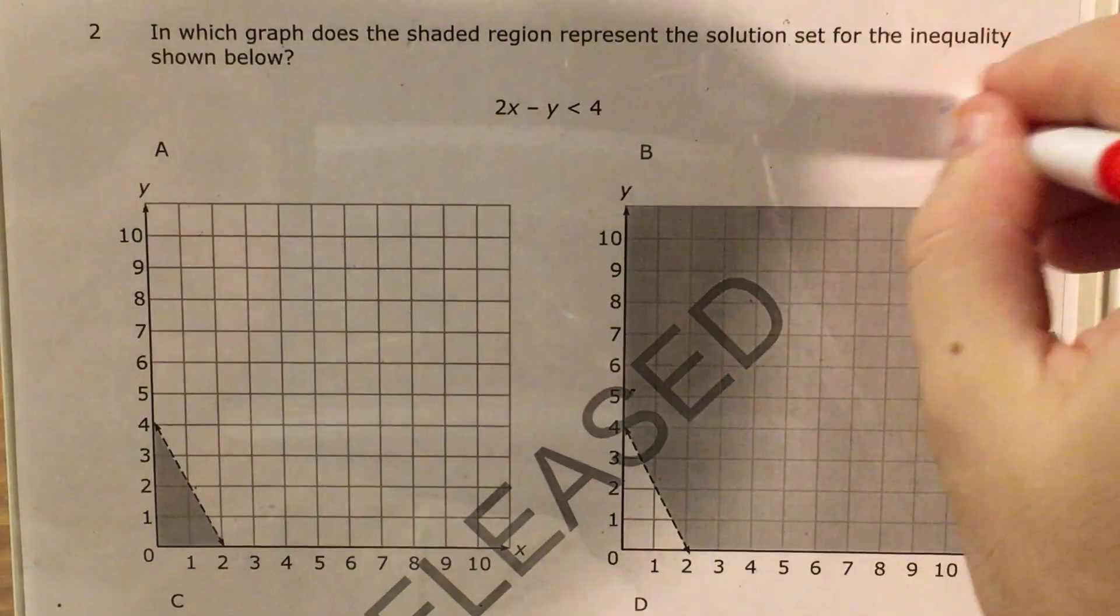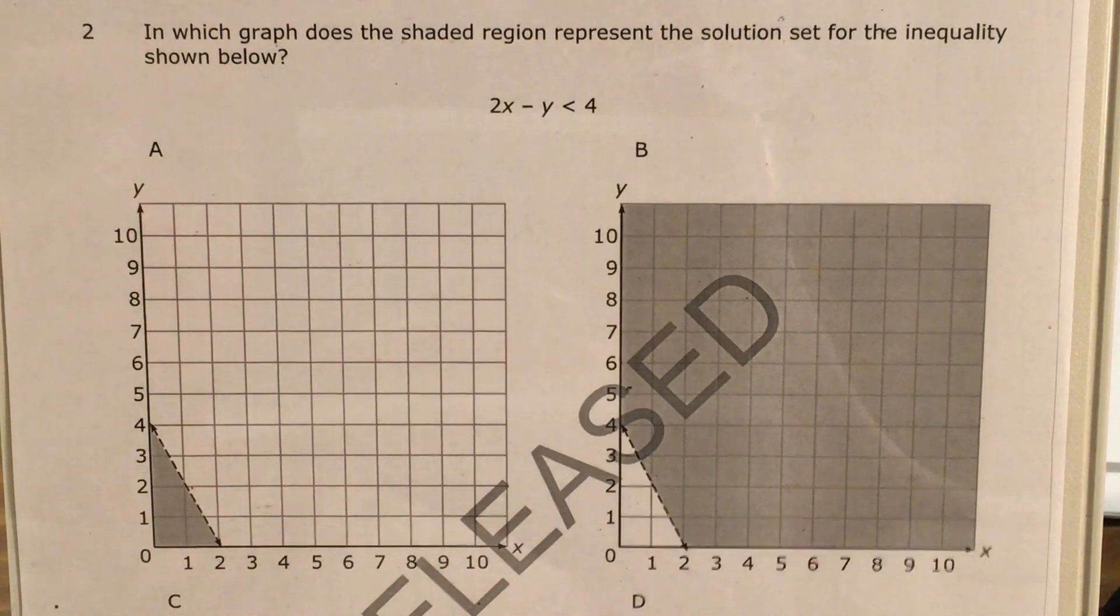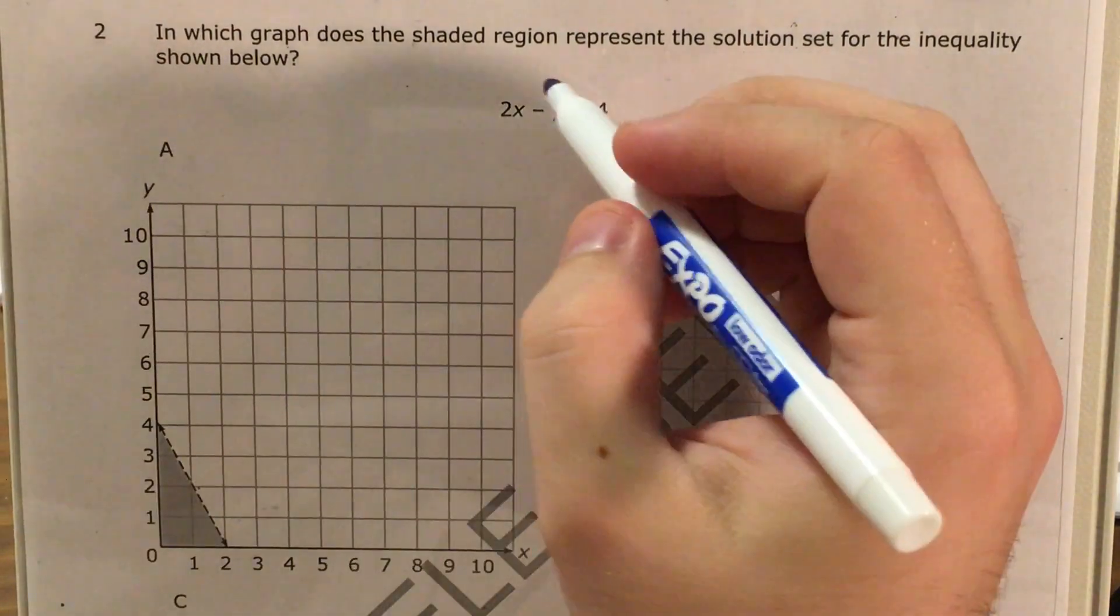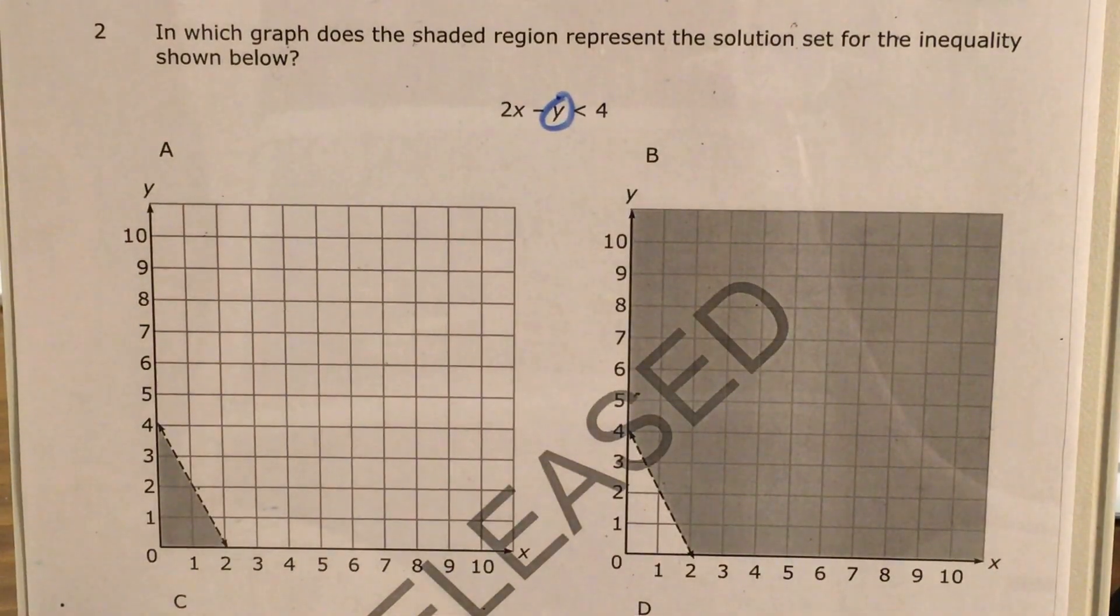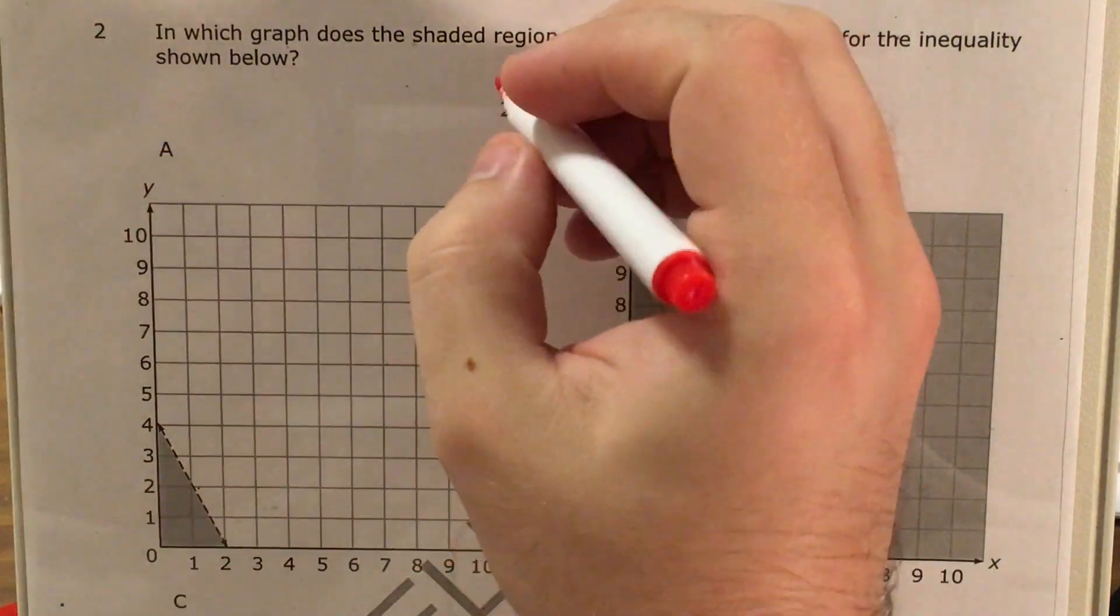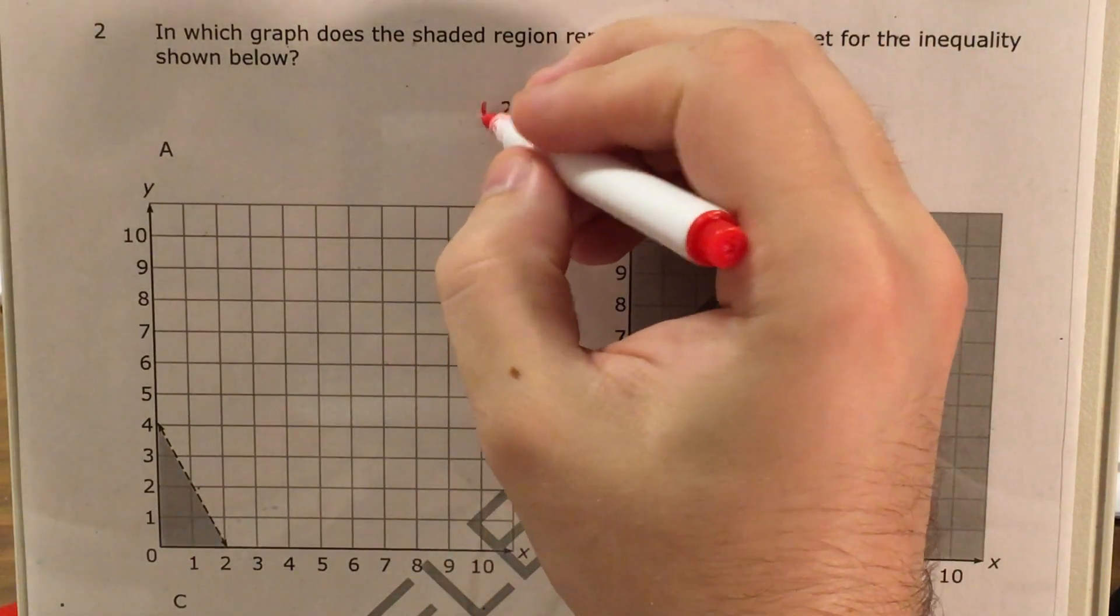So we want it to look a bit like that, where we have y by itself. So to get there, I'm just going to do my best to not touch y at all. So this is Fort Knox. I'm going to get rid of everything else as I go ahead and try to add, subtract, multiply, and divide as needed.